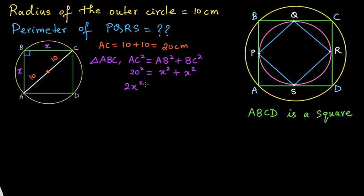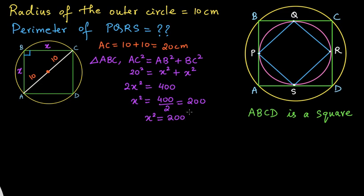x² plus x² equals 2x², so 2x² equals 20² which is 400. Therefore x² equals 400 divided by 2, which equals 200. We don't need x itself right now, just x² — let's keep this as equation number one.